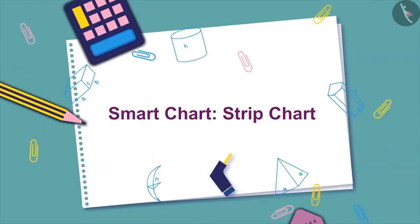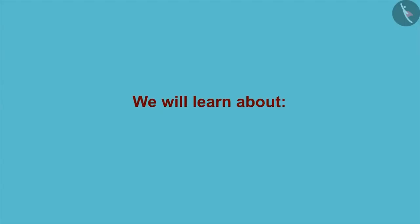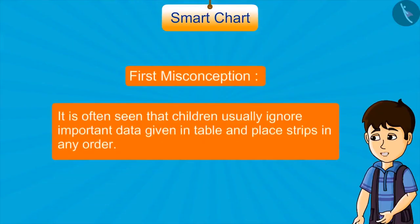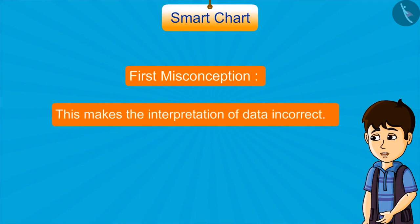Smart Chart. Strip Chart. In this video we will learn about some common misconceptions related to strip charts. It is often seen that children usually ignore important data given in a table and place strips in any order. This makes the interpretation of data incorrect.